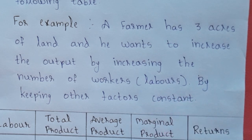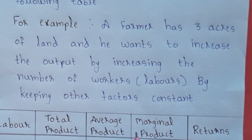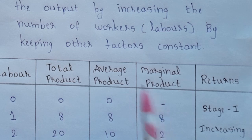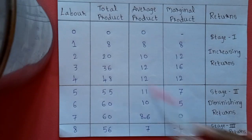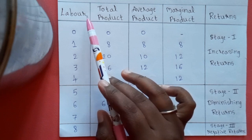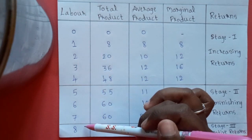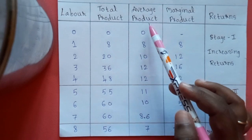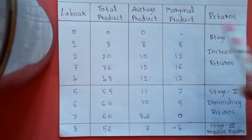The factors are constant; only labour increases. This gives three types of returns: first, increasing returns; second, diminishing returns; and third, negative returns. Labour is the variable factor which increases. Next, total product, average product and marginal product.